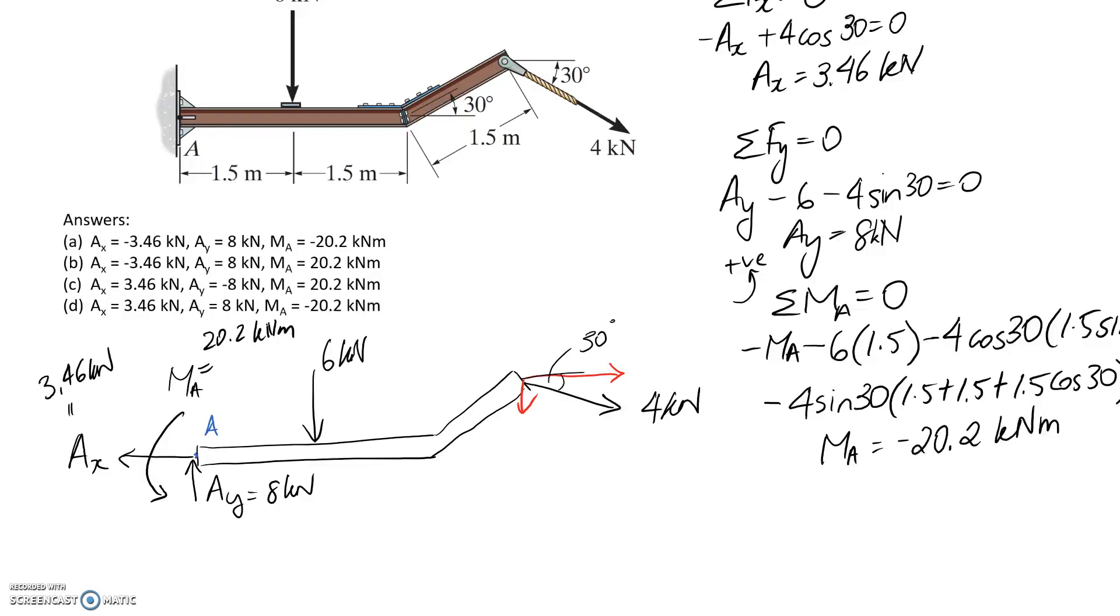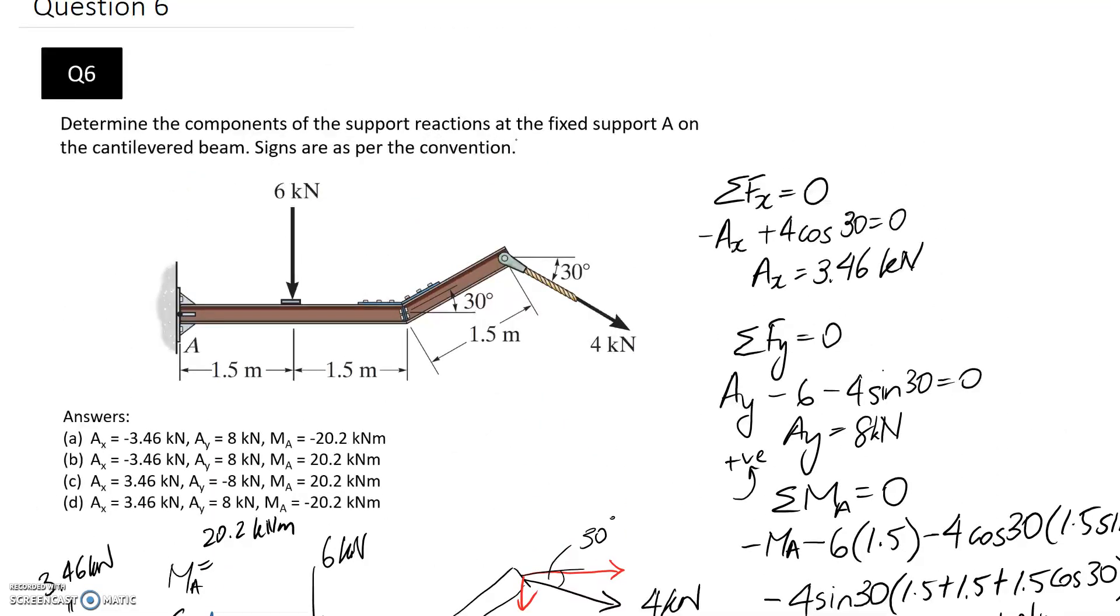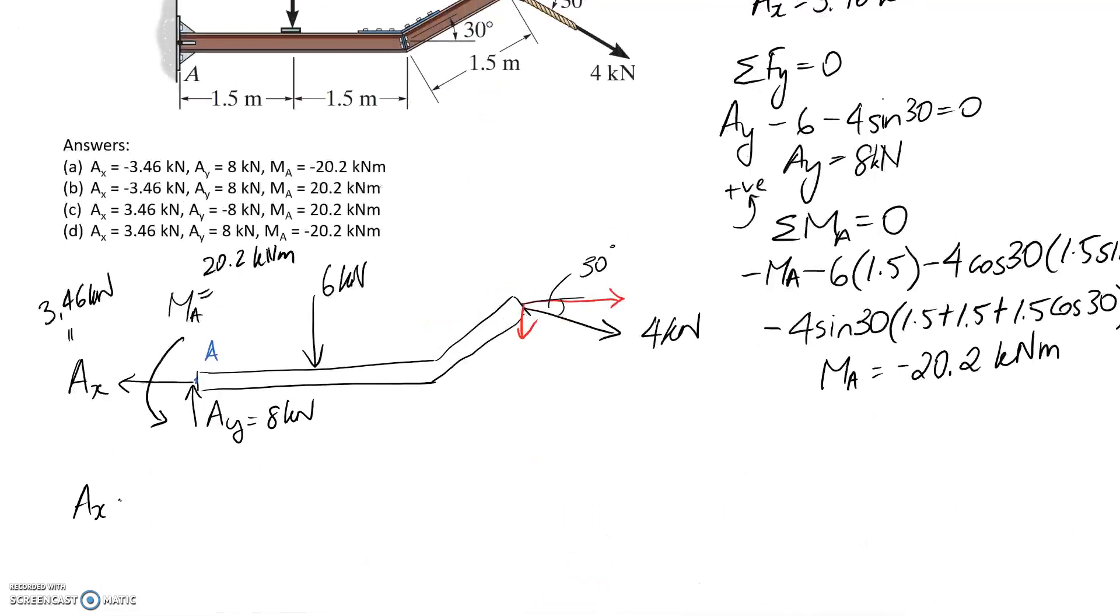Let's write out our final answer. We need to take into account the sign convention, so positive and negative directions. Ax, this is in the negative direction, so we're looking for the answer where it's equal to negative 3.46 kilonewtons, and we can see we have two options here. Ay, it's drawn upwards, so we're looking for a positive 8 kilonewtons. We've still got two answers potentially here. And the last one is Ma, and this is drawn in the anti-clockwise direction, so it needs to be positive for the answer we're looking for. So looking through here, I think we have this one, it's going to be the answer. So that's B.